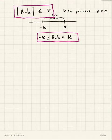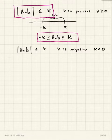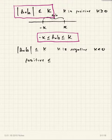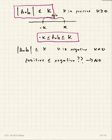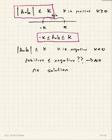If you have the absolute value of Bob less than or equal to K, but K is negative, remember that absolute value must be positive. A positive number can never be less than or equal to a negative number, so there is no solution. When you see an absolute value expression less than or equal to a negative constant, write no solution immediately.